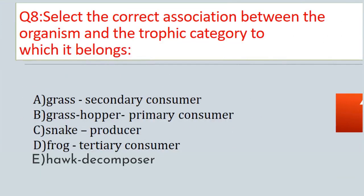Question No. 8. Select the correct association between the organism and the trophic category to which it belongs. Options are: A. Grass — secondary consumer. B. Grasshopper — primary consumer. C. Snake — producer. D. Frog — tertiary consumer. E. Hawk — decomposer.